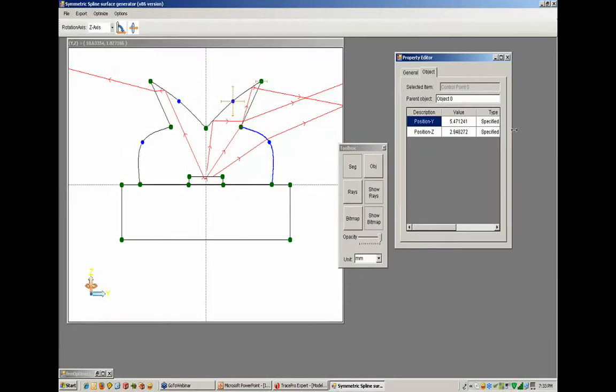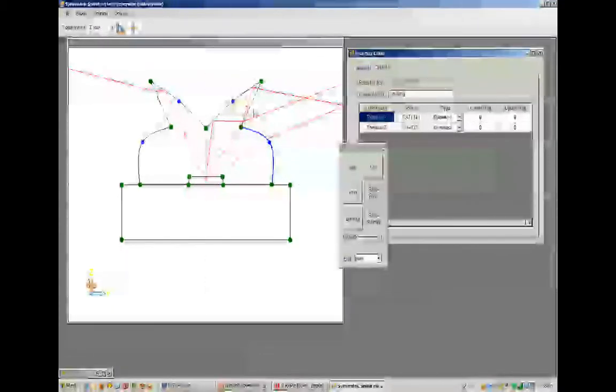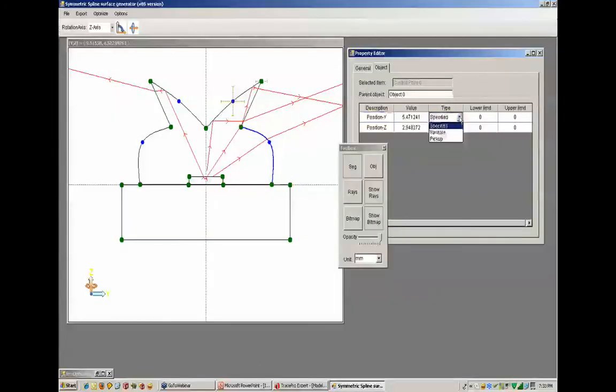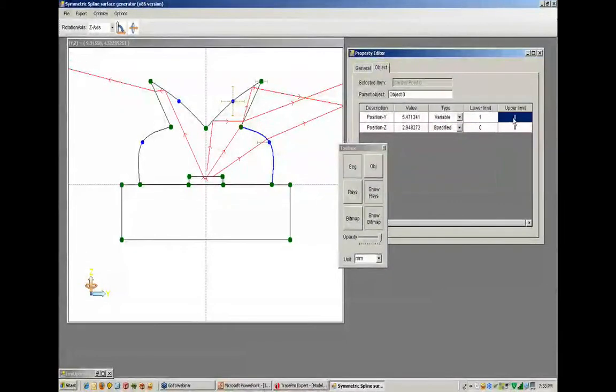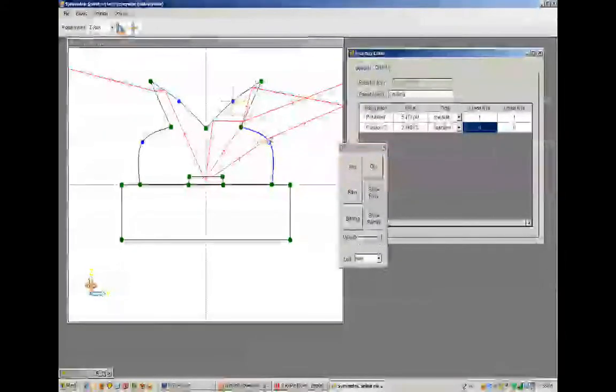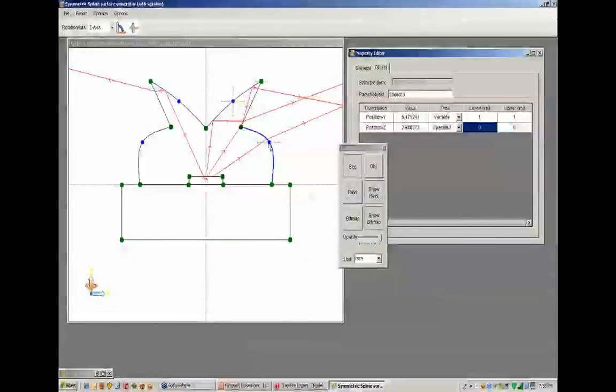I said that we had an optimization menu and a property editor that allow us to take a look at some of these values. And this is where you would specify if, for instance, this point that's grabbed over here is a specified point or if it's a variable and what its limits are to create a variable out of it. I just created this as a variable. You can now see the limits to which it can vary.